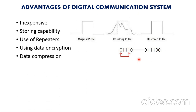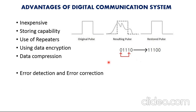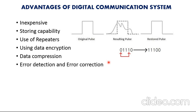Number five: data compression. Data compression can be done when you have large size of data or big data. Number six: error detection and error correction. In digital communication, coding is used; therefore, errors may be detected or corrected at the receiver. If you receive data with added noise at the receiver side, error detection as well as error correction is possible.